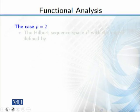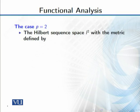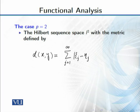Last thing we will see in this video is when we have fixed p equals 2. That is called Hilbert sequence space L^2, with the metric defined by d(x,y). It is defined by summation from j equals 1 to infinity, then you have |ξ_j - η_j| mod, now p equals 2, power 2, and overall we have 1 over 2.